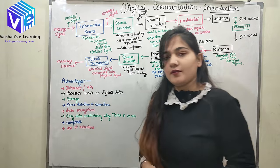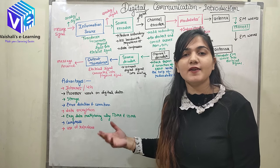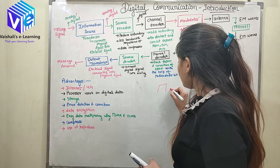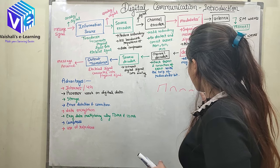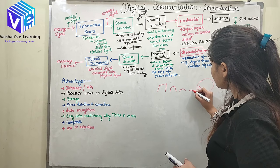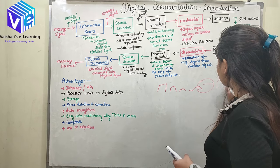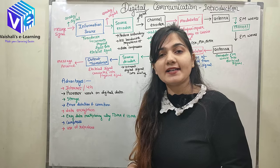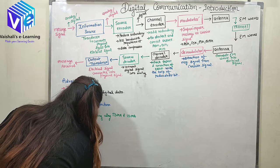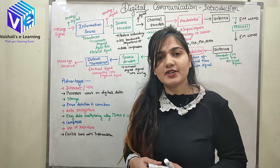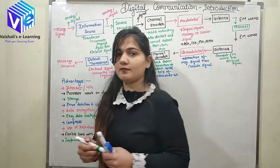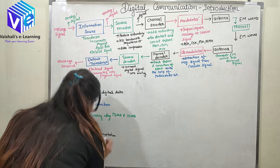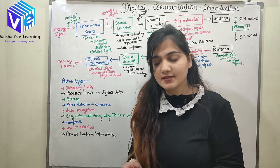We can also use repeaters. Repeaters act as a receiver and a transmitter. When a signal is traveling and becomes faded in the channel, a repeater receives it, amplifies it, and retransmits the amplified signal. We also have flexible bandwidth implementation. Due to large-scale production, digital communication systems are inexpensive, and we also have flexible hardware implementation which, due to mass production and high demand, is also low in cost.